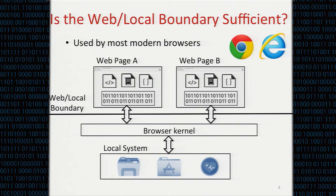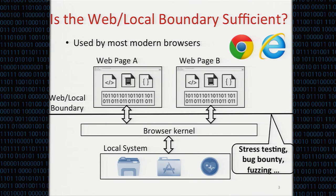One thing I want to mention is that this boundary has already been through a lot of security testing. For example, the interface between the renderer and the browser kernel has undergone a lot of security testing and fuzzing. It is also involved in multiple bug bounty programs. So these APIs are strongly written and tested. If we get this interface right, we can protect the browser kernel and local system from all websites.